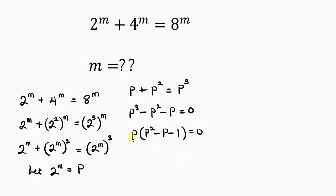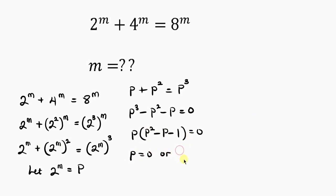Since we have an expression multiplied by another expression equaling 0, we can split them and say: p equals 0, or p squared minus p minus 1 equals 0.